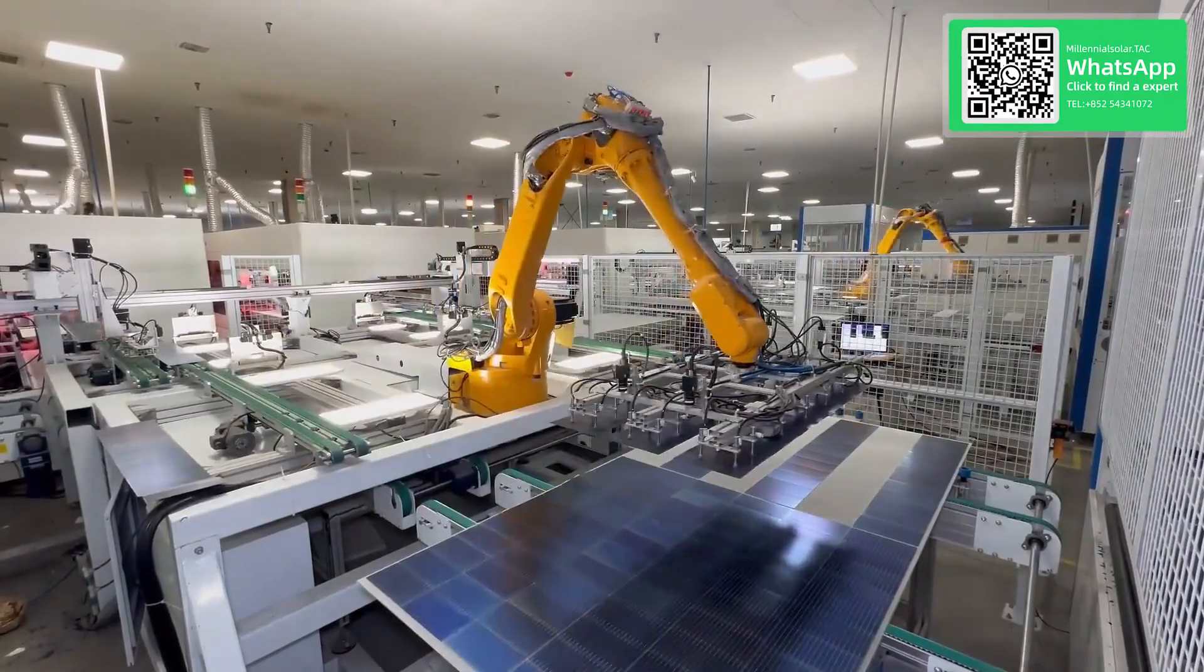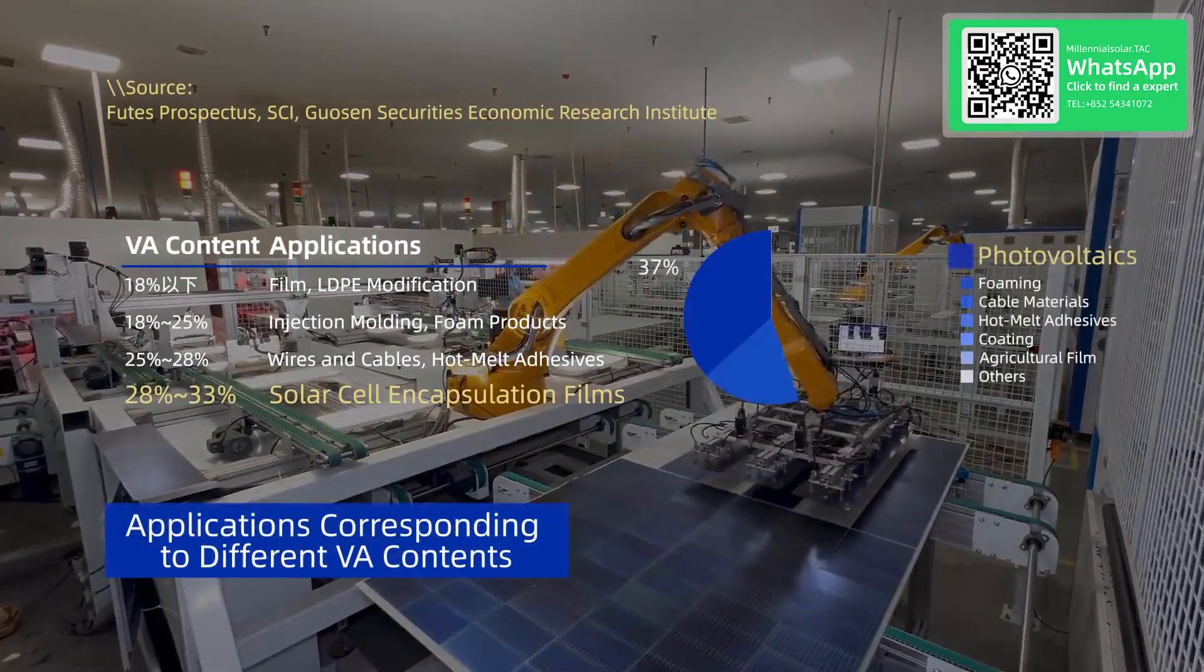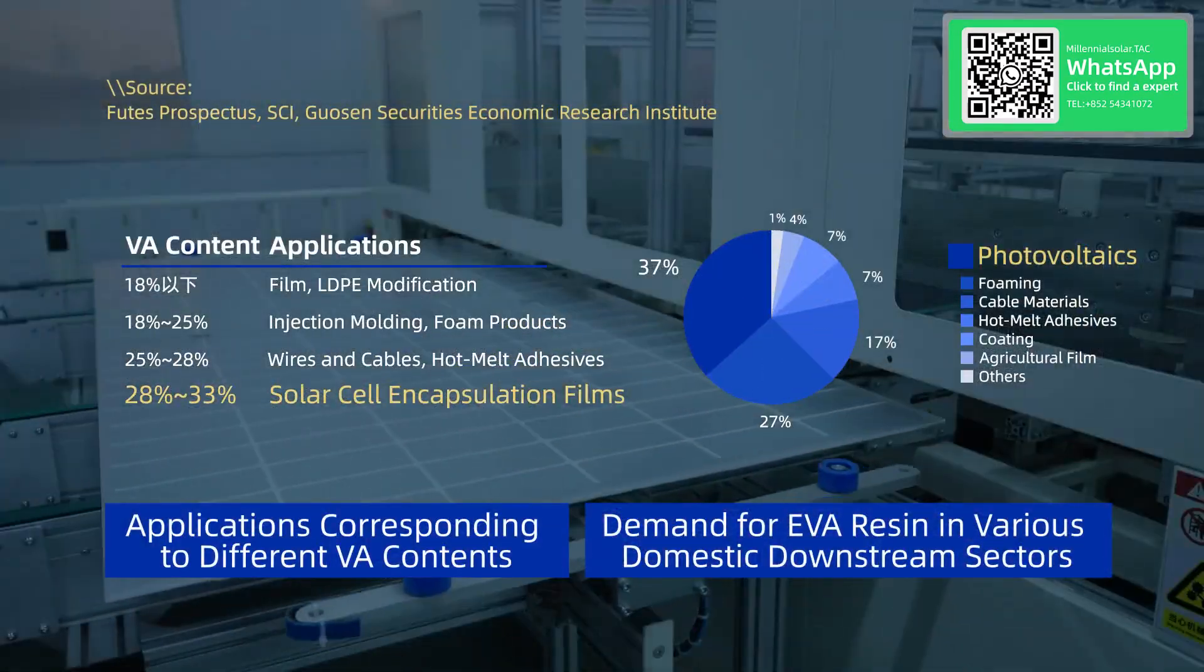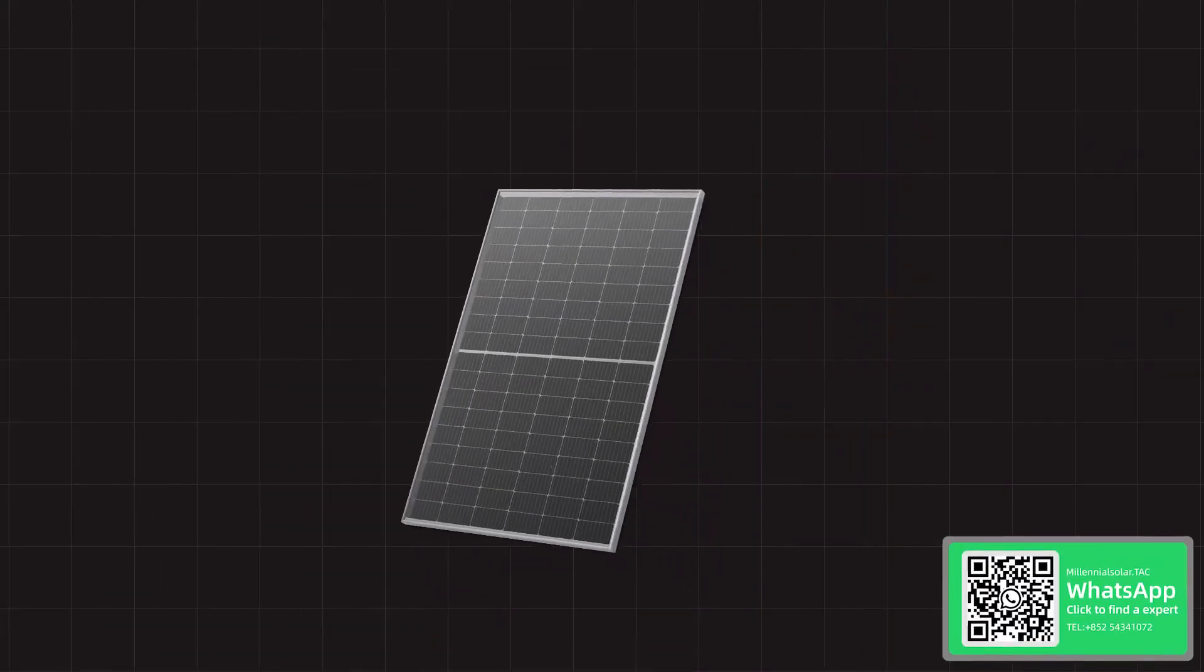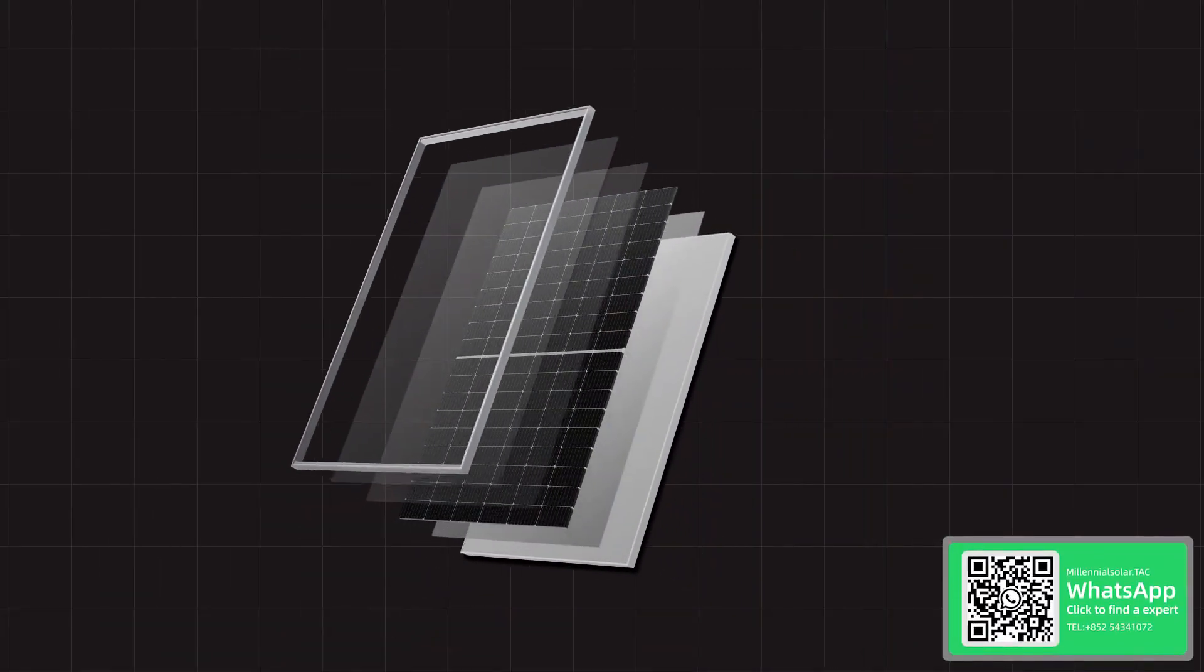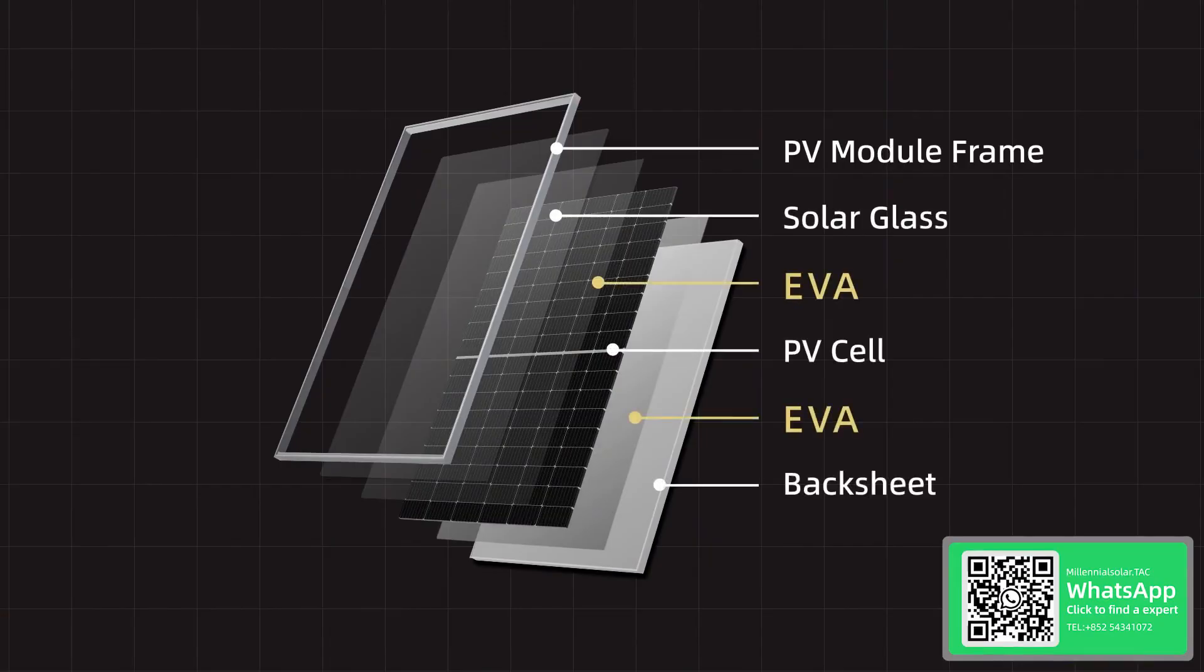Today, EVA is widely used in the solar photovoltaic industry as an encapsulation film for PV modules. It acts like the filling in a sandwich, firmly bonding photovoltaic glass, cell slices, backsheets, and other components into a single unit, essentially serving as the structural adhesive of the module.